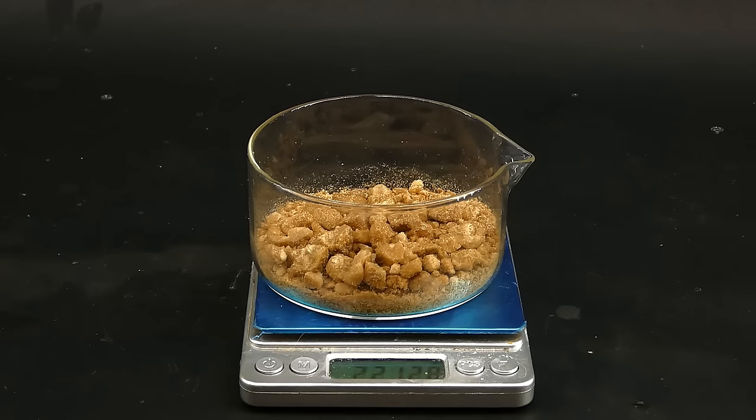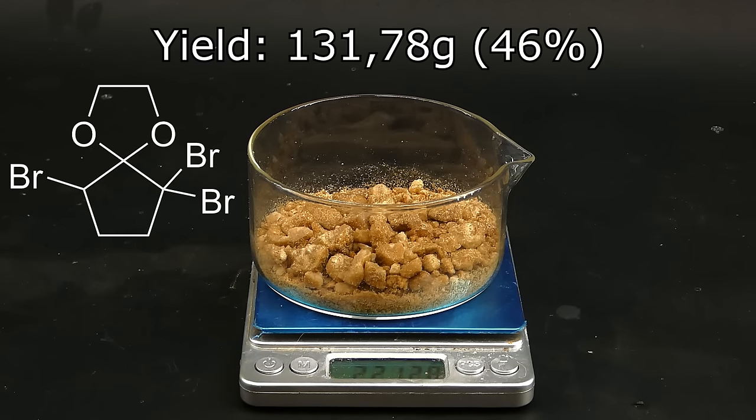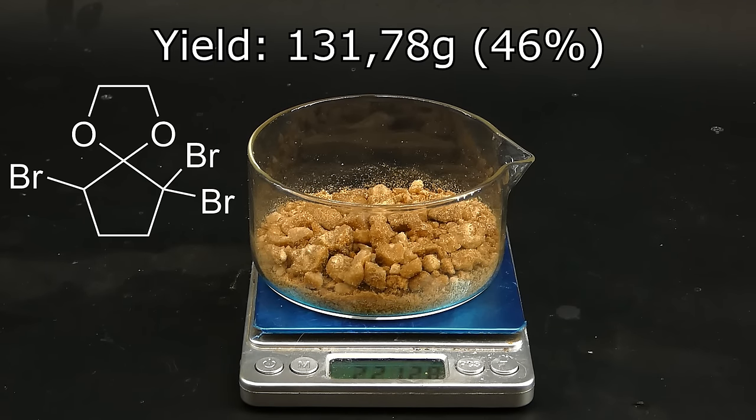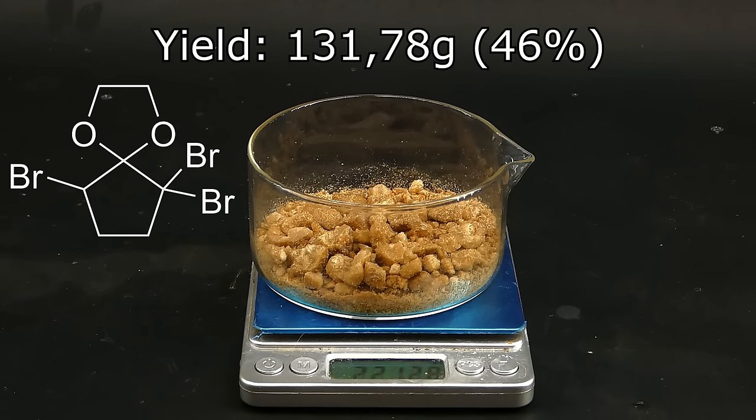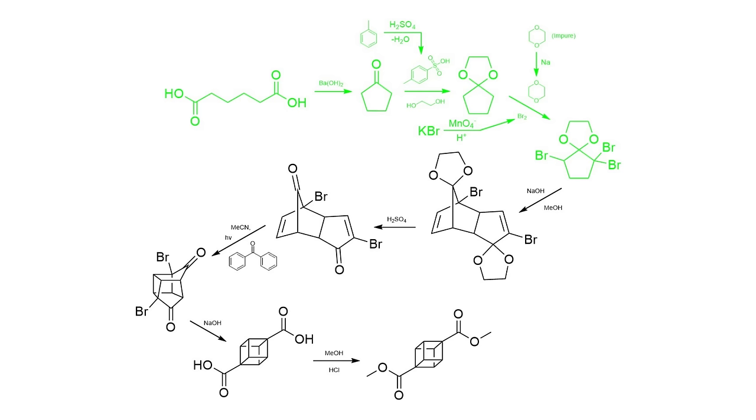When it comes to the yield, I managed to make 131.78 grams of the 2,5,5-tribromocyclopentanone ethylene ketal, corresponding to a percent yield of 46%, which isn't a lot, but considering all the washing steps and recrystallizations, this is rather acceptable. This step in the synthesis has been the hardest by far. Including all the preparations, washings, and recrystallizations, it took me three whole weeks, and thank God it's finally over.